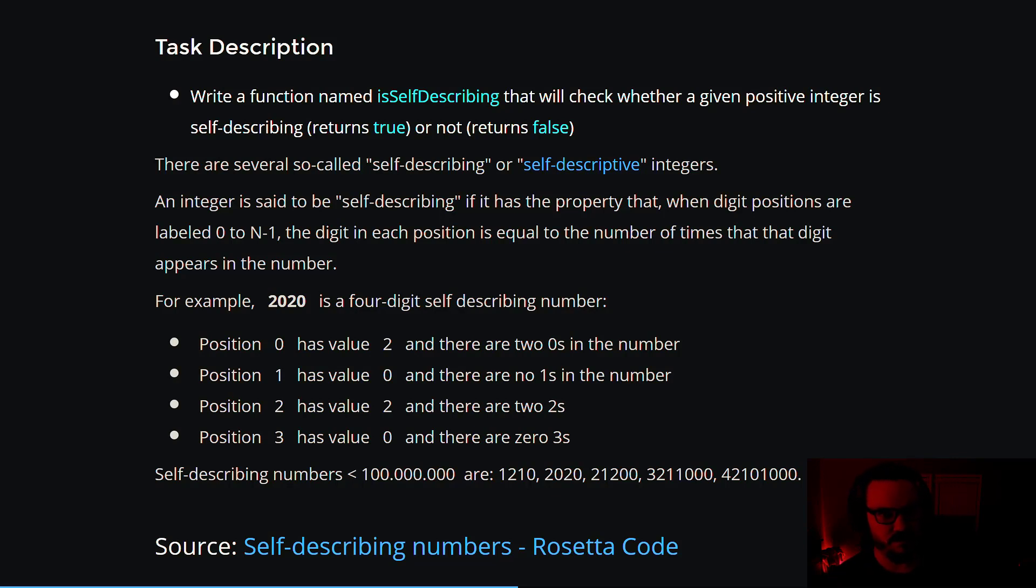The description here is that you want to write a function named is self-describing and it will check whether a given positive integer is self-describing and if it is, it'll return true or not, it'll return false.